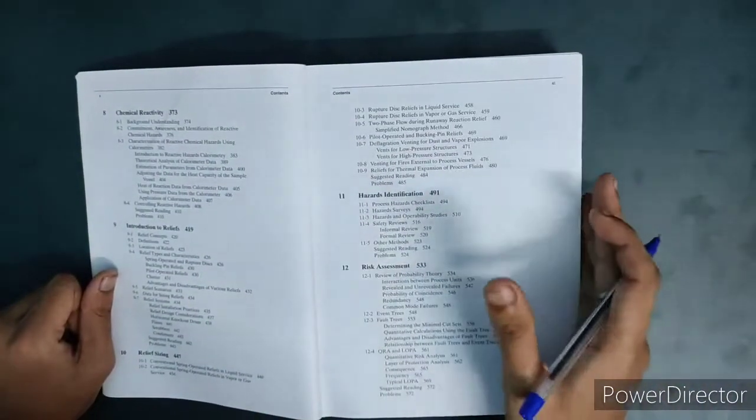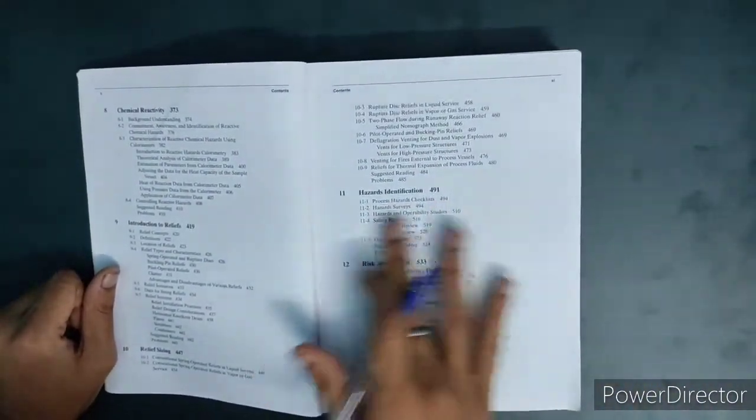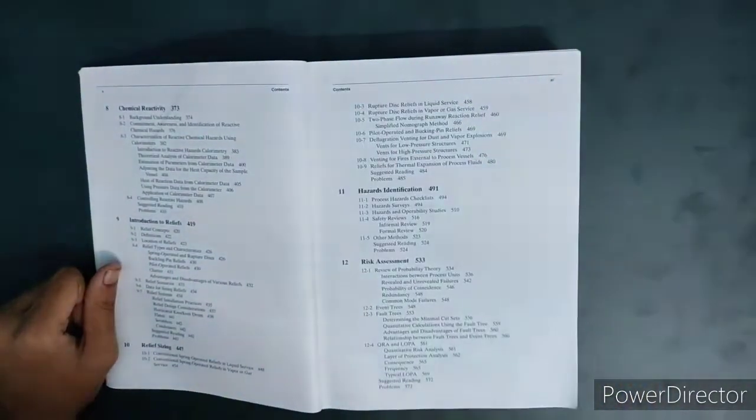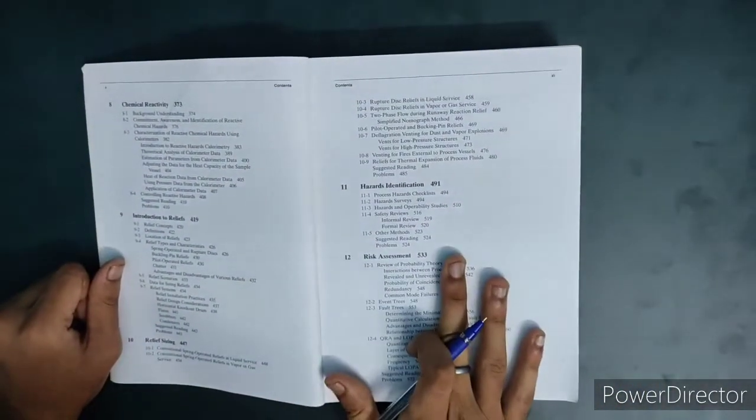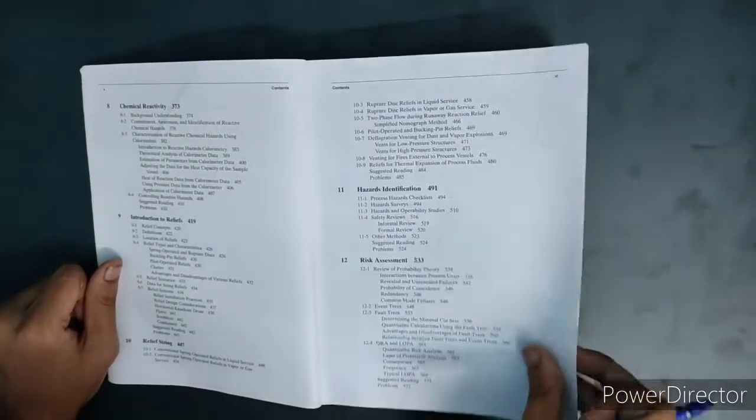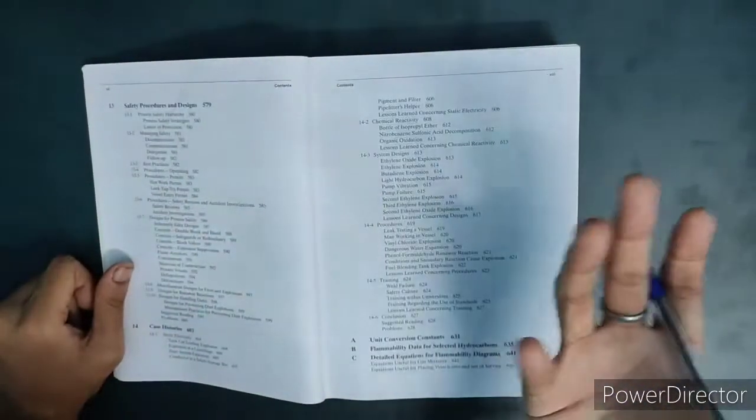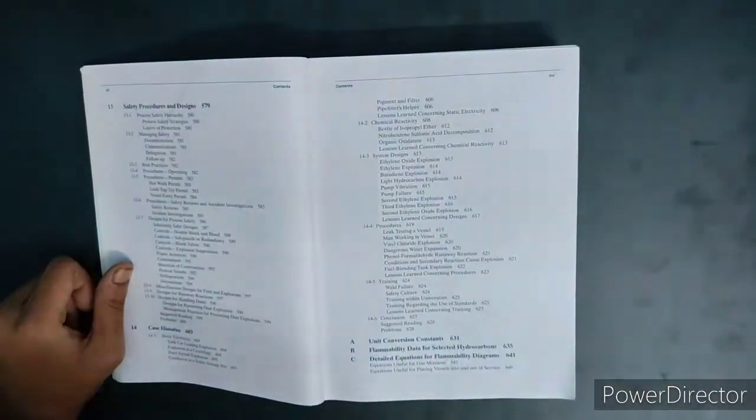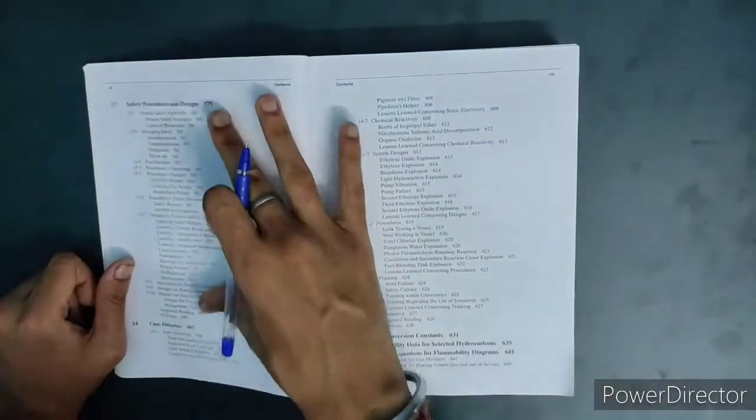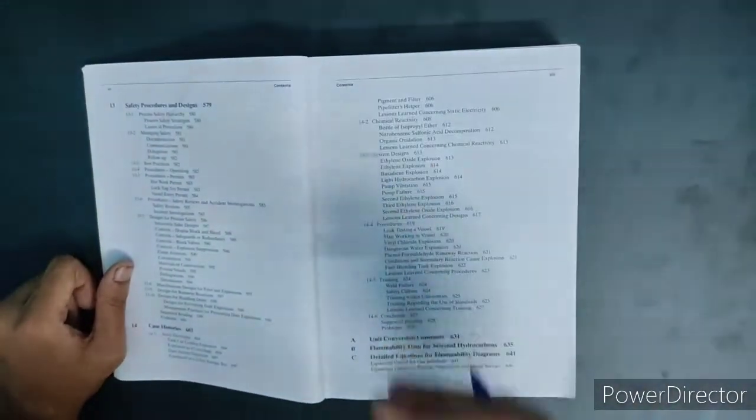Hazard checklist, hazard surveys, HAZOP and other important methods they have given here. Chapter number 12 comprises of risk assessment - how you can carry out a risk assessment as well as various types of risk assessment is also included. Chapter number 13 is with regards to safety procedures and design - how you can implement the safety procedures and how you can design them, what are the basic criteria.